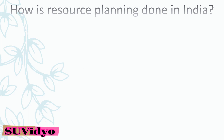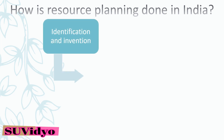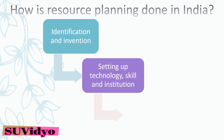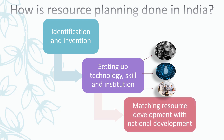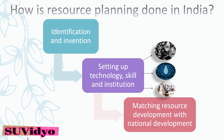Resource planning is done in India in three steps. First, resources are identified and inventoried. Then, technology, skill and institutions are set up for the development of the resource. And then, resources are matched with the development of the nation.